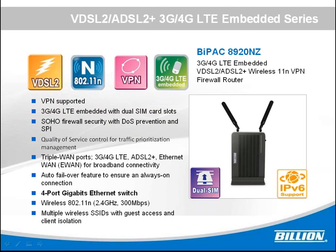If your main interface is VDSO rather than ADSO, the 7800 doesn't fit — you have to choose the 8920 or 8910. The major difference is just the WAN interface. The 7800 provides up to 100 Mbps Ethernet interface only, while the 8920 provides gigabit Ethernet interface.